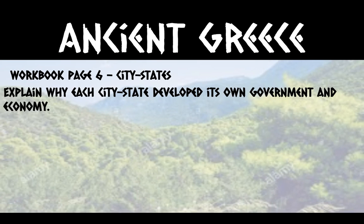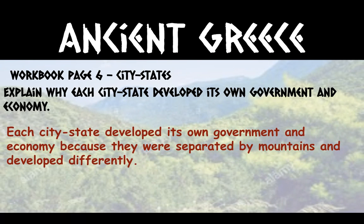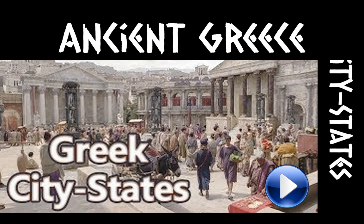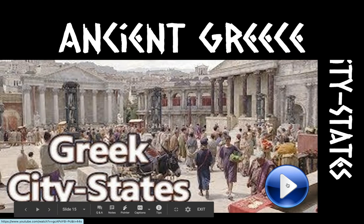There's a question at the bottom of page five: explain why each city-state developed its own government and economy — think geography. Stop the video, think up an answer, then press play to review. We know that city-states developed their own governments and economies because they weren't unified — they were separated by the mountains and so they developed slightly differently. Now we're going to watch a video about the Greek city-states.